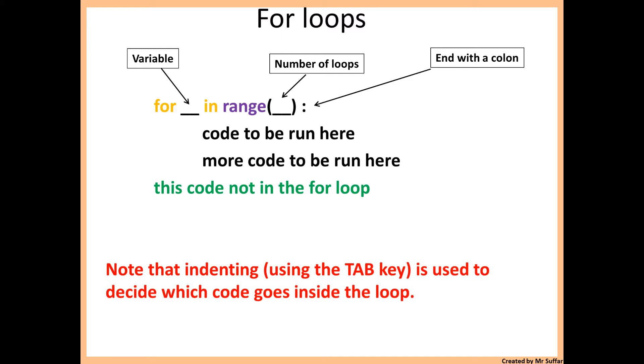Then you put in range and after that in parentheses you need to put the number of loops. How many times do you want this specific code to be repeated? Then you end it with a colon. You always use colons at the end of a for loop.